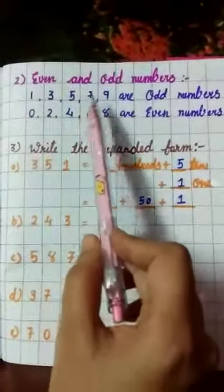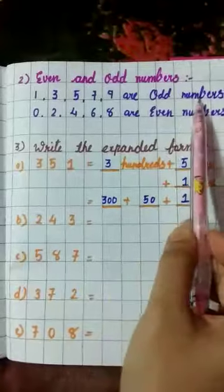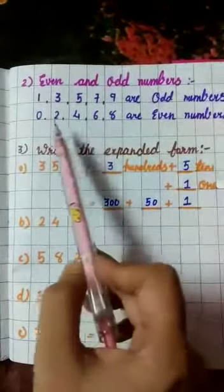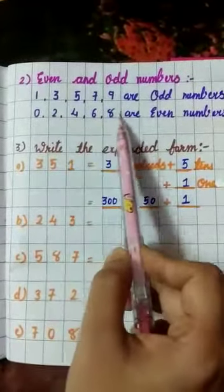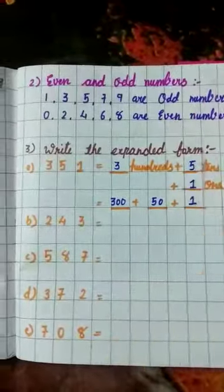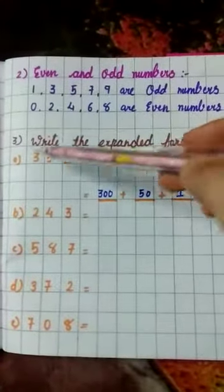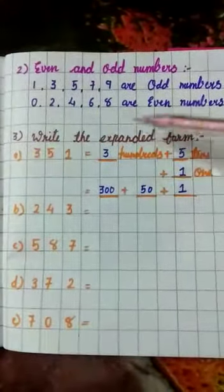1, 3, 5, 7, and 9 are the odd numbers. In the second line, write 0, 2, 4, 6, 8 are the even numbers. Then leave one line. Write question number 3: Write the expanded form.